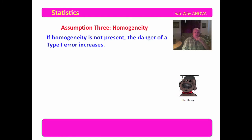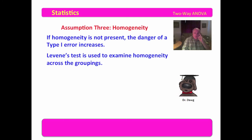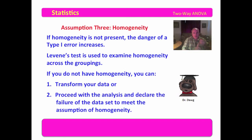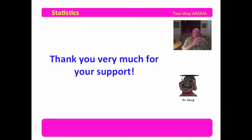Assumption three is homogeneity of variance. If homogeneity is not present, the danger of a Type I error increases — you have a greater likelihood of rejecting the null hypothesis when it's true. Levene's test is used to examine homogeneity across the groupings. When you run this in SPSS, you can have a Levene's test for each grouping. If you do not have homogeneity, you can transform your data or proceed with the analysis and declare the failure of the data set to meet the assumption of homogeneity.